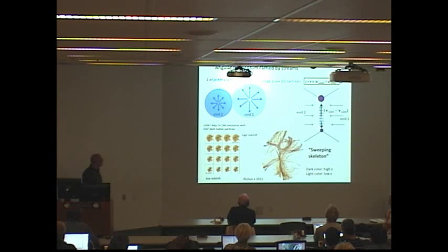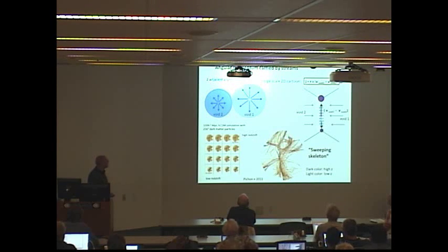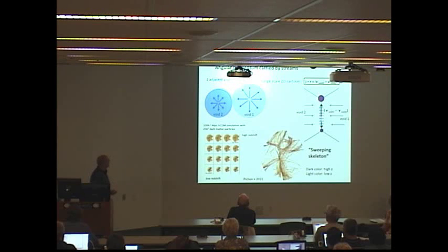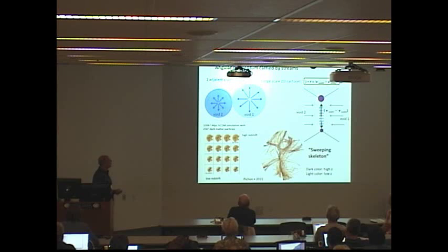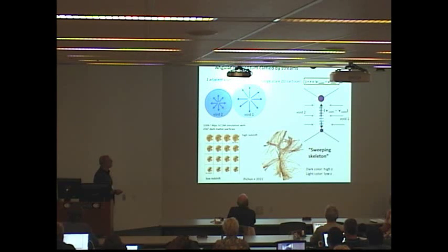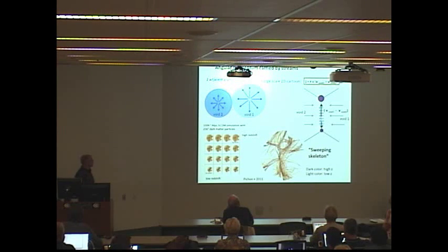Angular momentum carried by streams — this is work we did quite a while ago with Christophe Pichon, Dimitri Pogosian, Tyson Kim, and Adrian's List. The cartoon, essentially in 2D: you have two asymmetric adjacent voids expanding, and at the interface between them they create a filament. Where the filaments intersect at the nodes you get halos, and since these voids are asymmetric they have a slightly different velocity. You get a low transverse velocity in the filament, and as matter is advected towards the halo, you bring in this angular momentum.